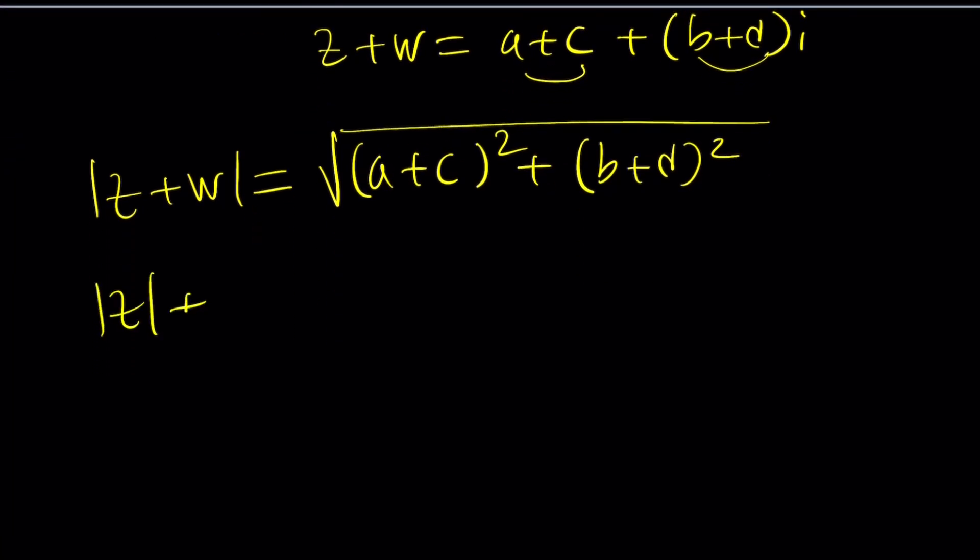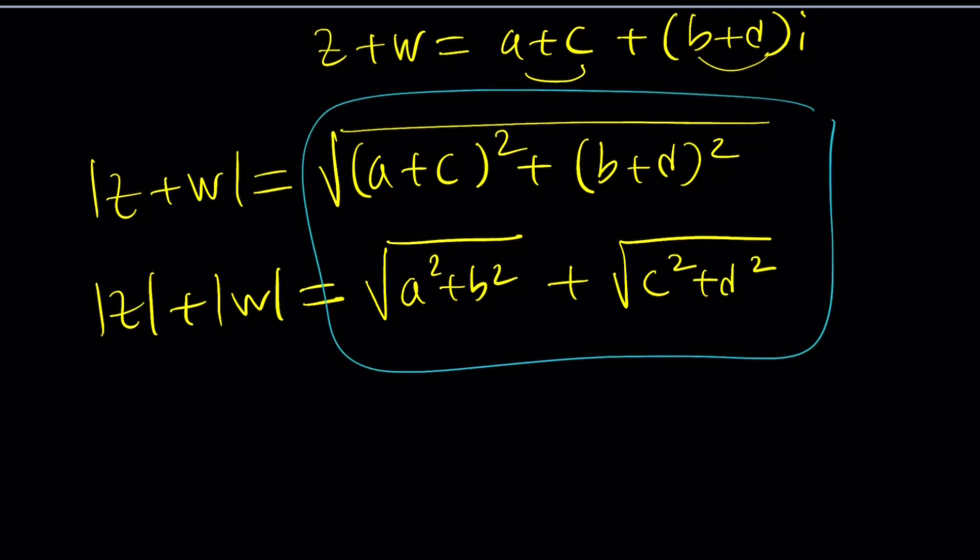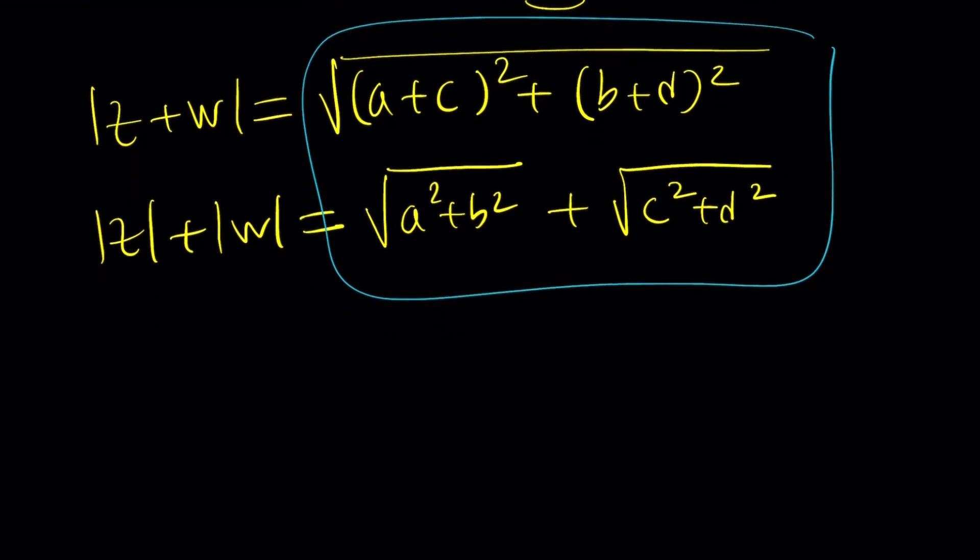What about the absolute value of Z plus the absolute value of W? Separately taken, this is going to be A squared plus B squared, from Pythagorean theorem, plus square root of C squared plus D squared. We want these two things to be equal, right? Because they're equal to two things that are equal to each other.